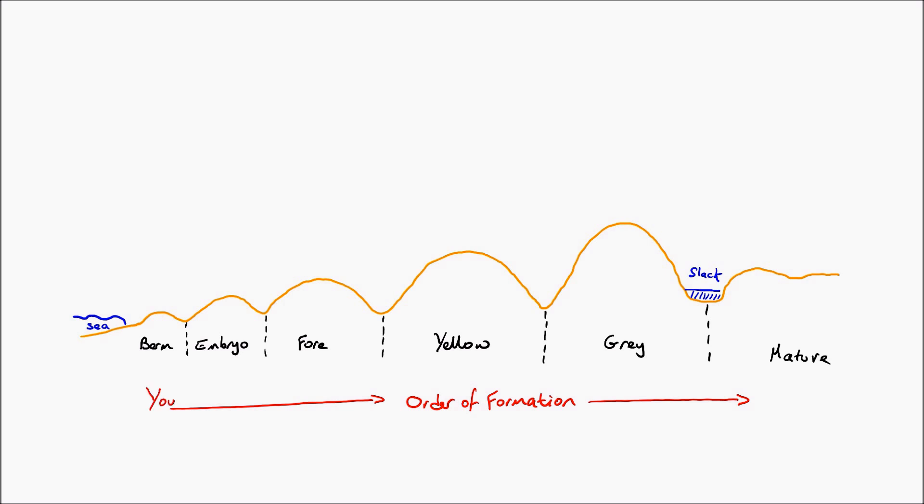Now eventually what will happen is that vegetation will accumulate on this berm and the vegetation will trap additional sediment and these little embryo dunes will then get bigger and bigger and bigger. They'll have even more vegetation on them and they will gradually grow as they move inland.